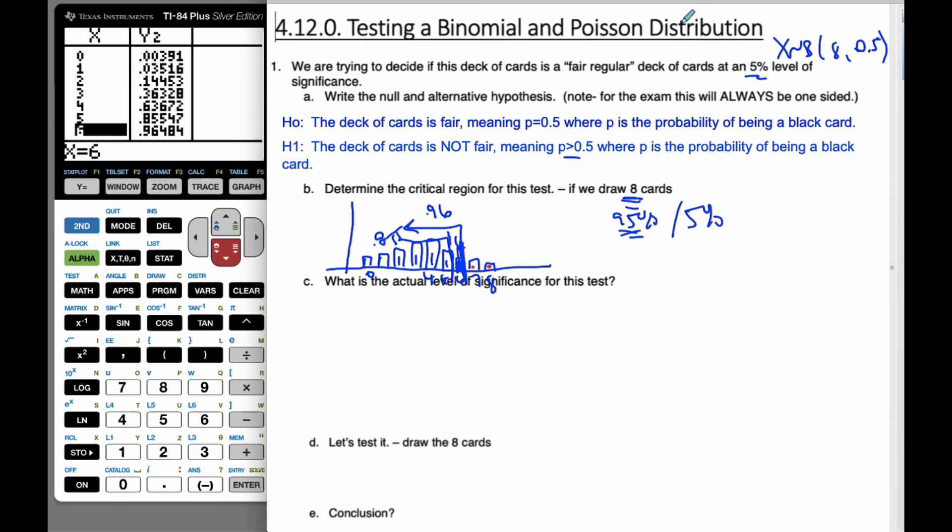And so what happens is 6 ends up being my barrier. And so I know the critical region is going to be, if I pick 7 cards or 8 cards, then my critical region is going to be x is bigger than or equal to 7. Because then I will reject the null hypothesis. Anything less than 6, included 6, will not be my critical region. So I will believe that it is a fair card.